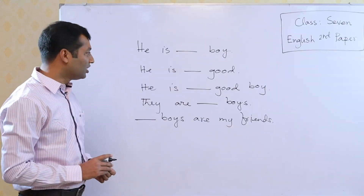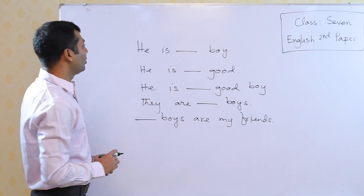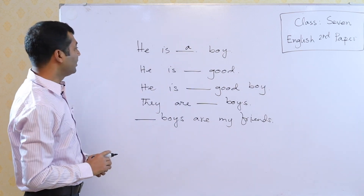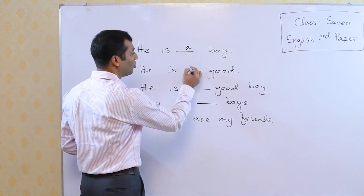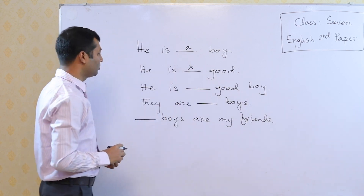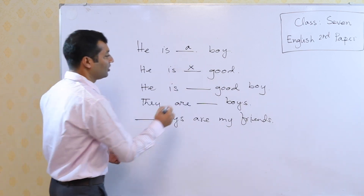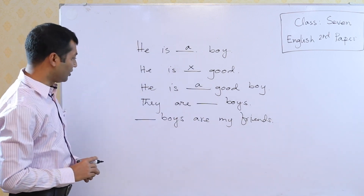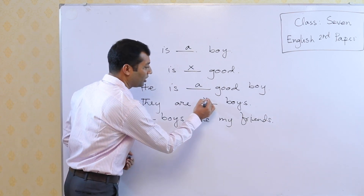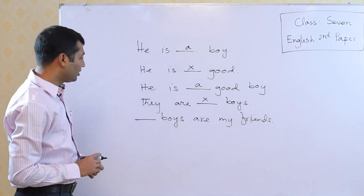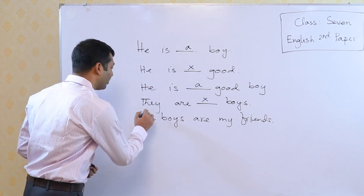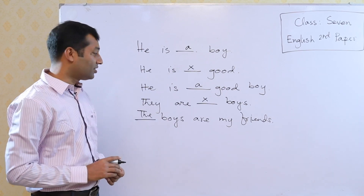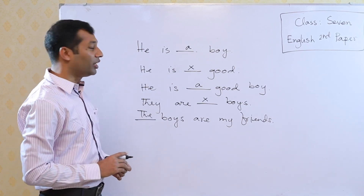So if I ask you to fill in the blanks, what will you do? You will use 'a' here — he is a boy. And next sentence: he is good, so there will be no word, so it will be a cross. In the next sentence there will be 'a' — he is a good boy. Come to the fourth sentence: they are boys, so no article will be used. And in the fifth sentence: the boys are my friends. So students, you can easily understand what we are going to learn today.